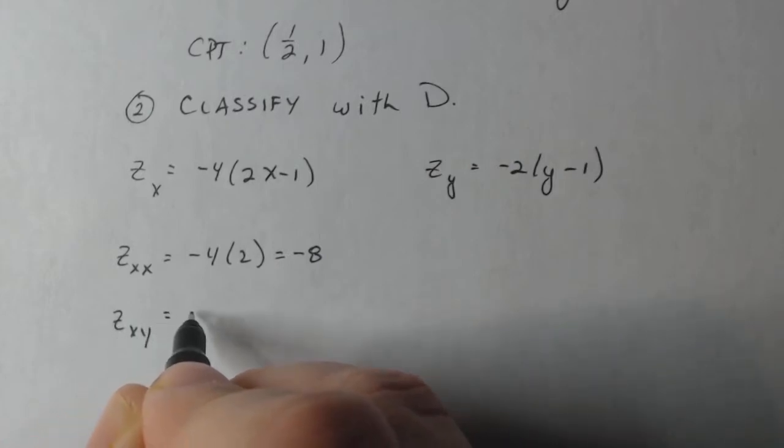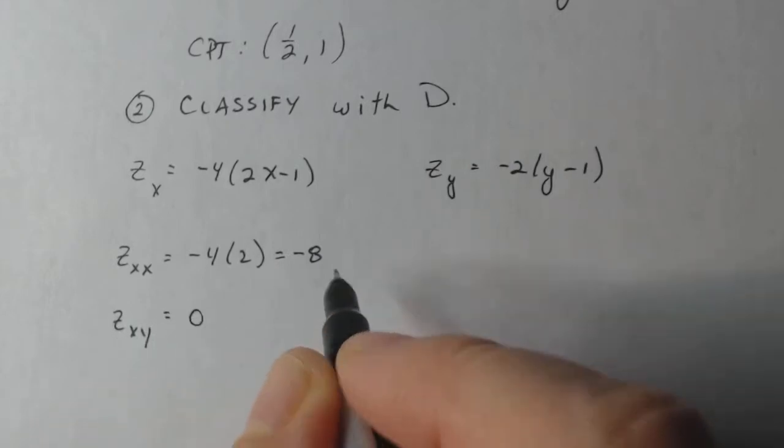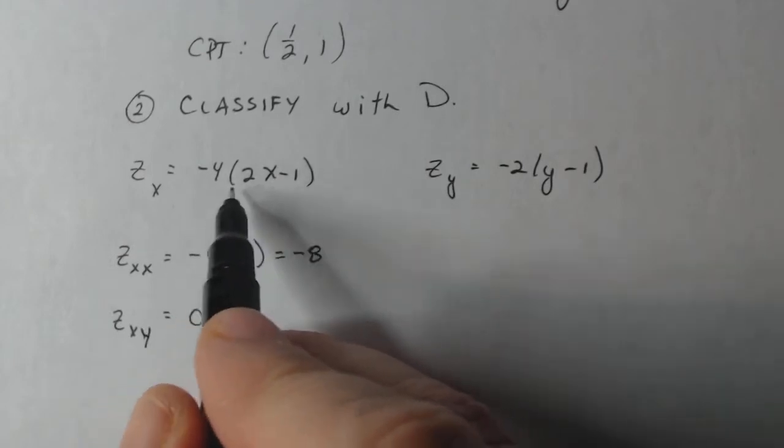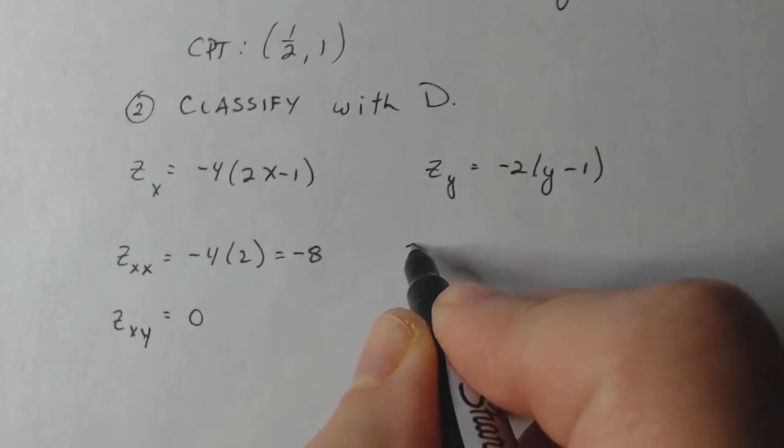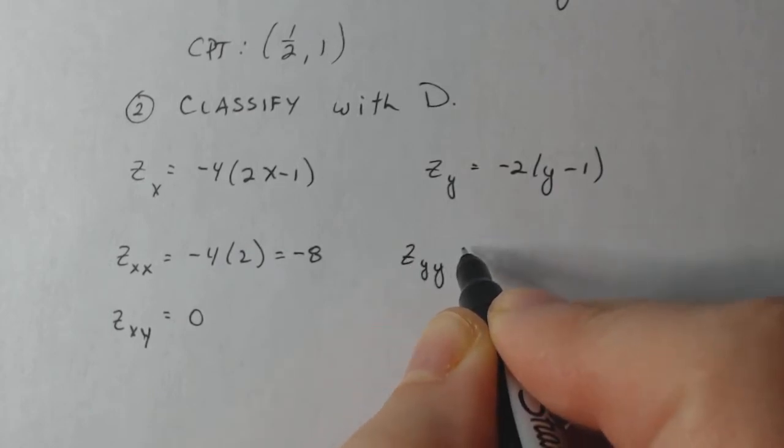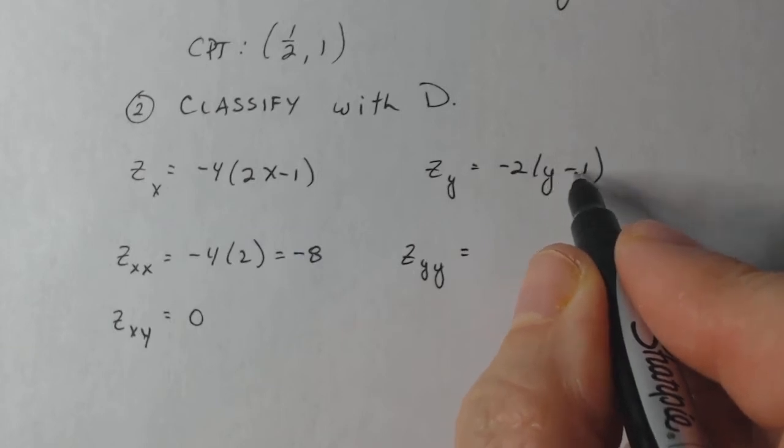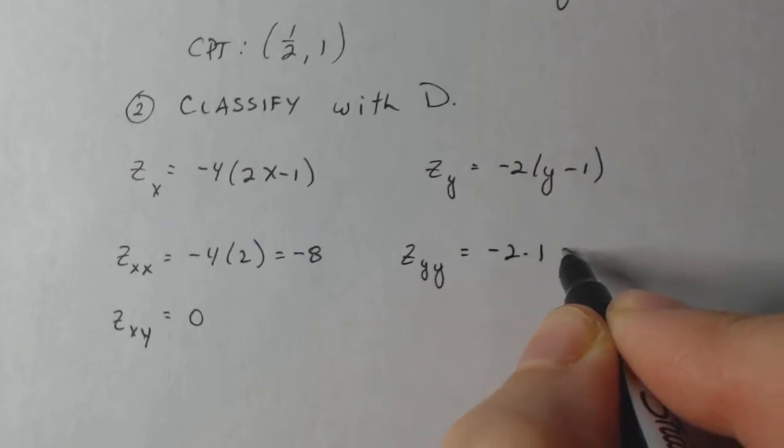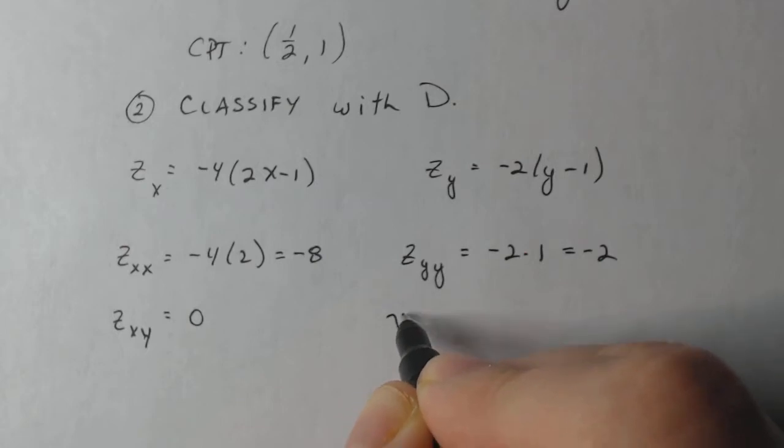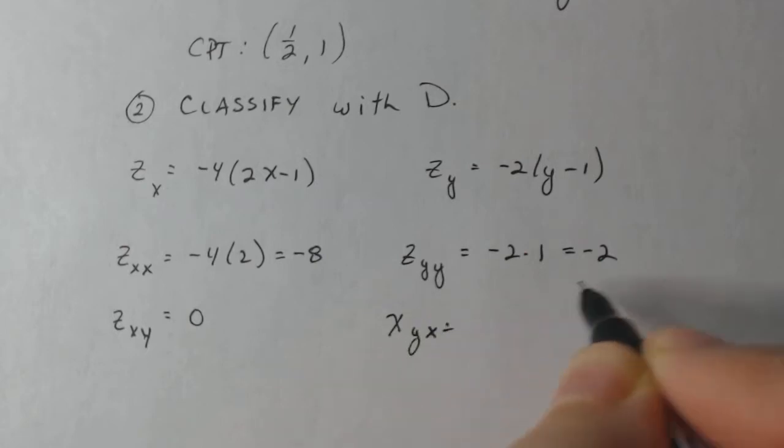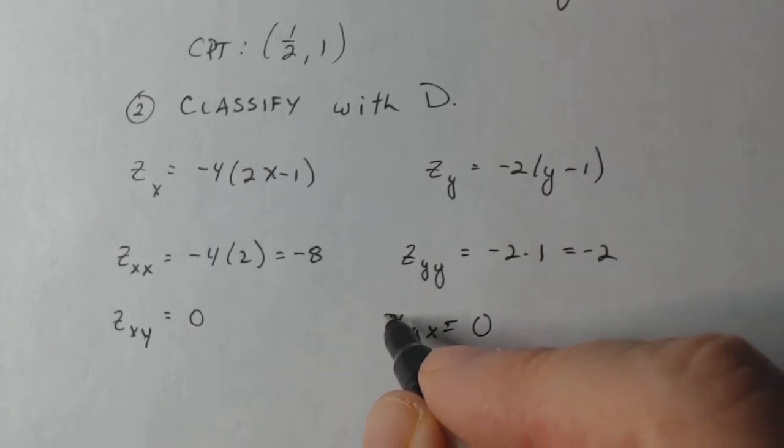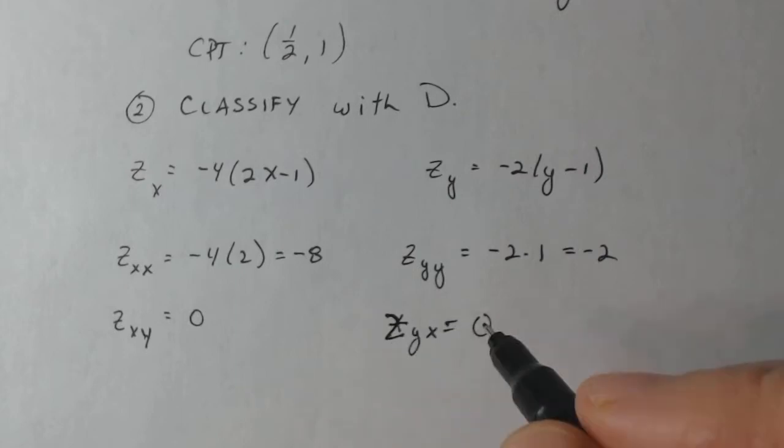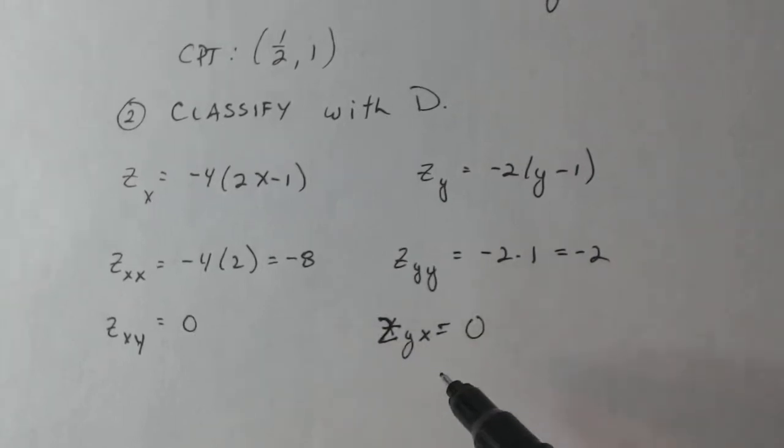Then z sub xy is zero, because if I take the derivative of something that has only x's in it with respect to y, it's zero. Then z sub yy is equal to, well, the derivative of this inside is one, so it's minus two times one, minus two. And just for kicks, what's z sub yx? Well, the derivative of that with respect to x will be a constant, so the derivative will be zero. And I put an x here, that should be a z. So those are equal. That means we're on the right track.